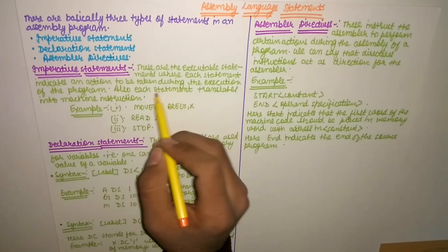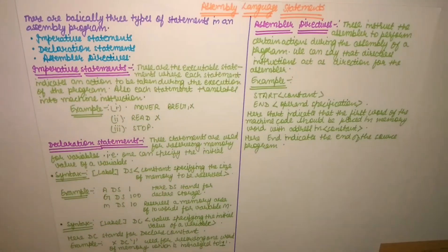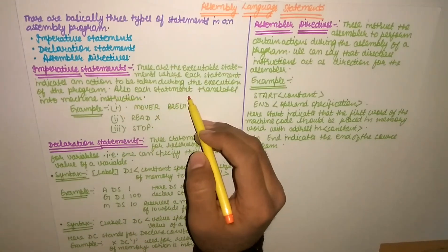So these are... we learned that each statement translates into machine instruction. MOVER, machine instruction mein translate hogi. Then the computer will understand 04, when it gets translated, that it has to move from memory into the register. So these are the imperative statements.